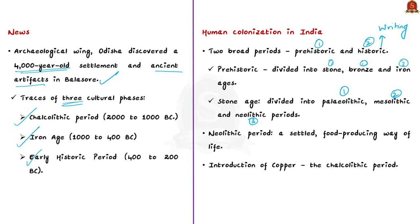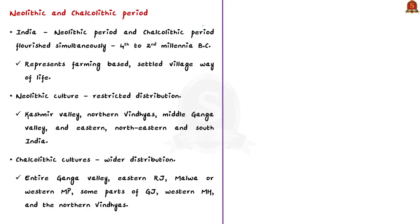Economically, the Paleolithic and Mesolithic periods represented a nomadic hunting-gathering way of life, whereas the Neolithic period represented a settled food-producing way of life. Later, copper was introduced as a new material, and this period was designated as the Chalcolithic period — because in Greek, copper is termed as 'Chalcos.' Importantly, elsewhere in the world the Neolithic period preceded the Chalcolithic, but in India these two periods flourished simultaneously during the fourth to second millennia BC.